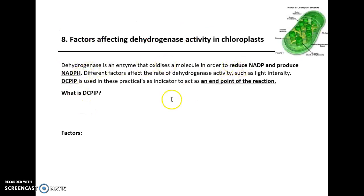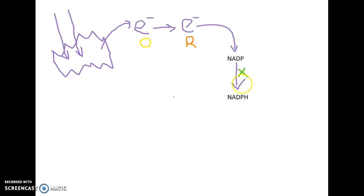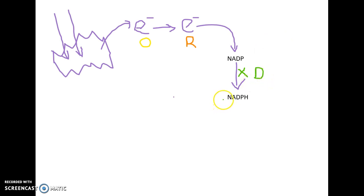Dehydrogenase is an enzyme that oxidizes a molecule in order to reduce NADP to produce NADPH. So in order to investigate the rate of photosynthesis and specifically the rate of the light-dependent reaction, we can look at factors that will affect this enzyme — dehydrogenase. For example, if we use a high temperature that will denature the enzyme, that means we will have less NADPH and more NADP. We can find out certain factors such as the optimum temperature for dehydrogenase.